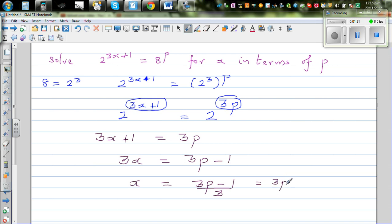Now if you want to simplify this a little, this is 3p over 3 minus 1 over 3. So finally, the simplified answer of x in terms of p is p minus 1 third. And this is your final answer.